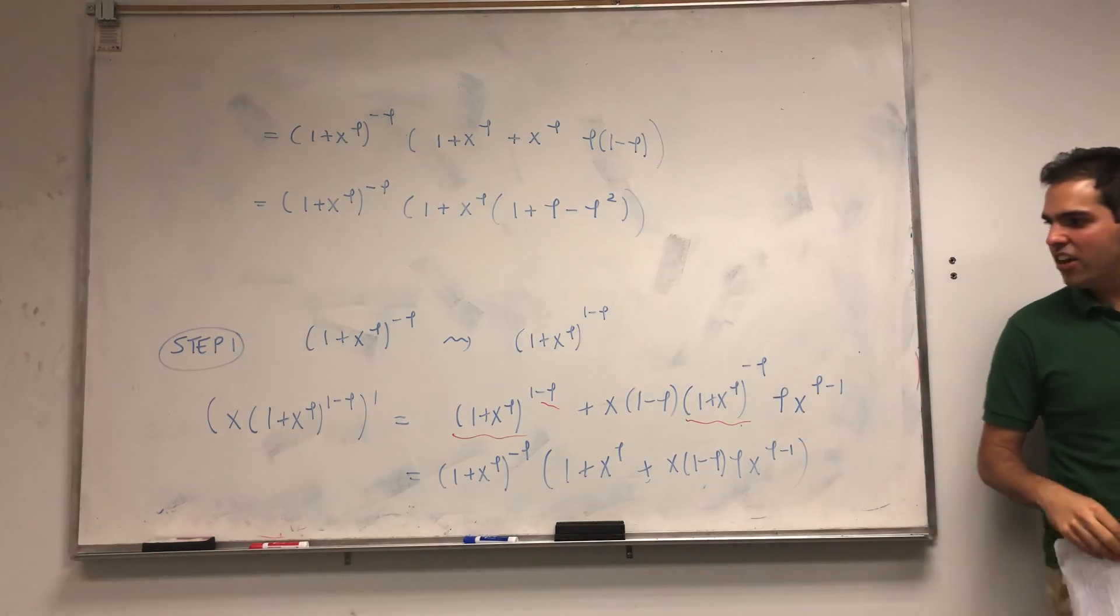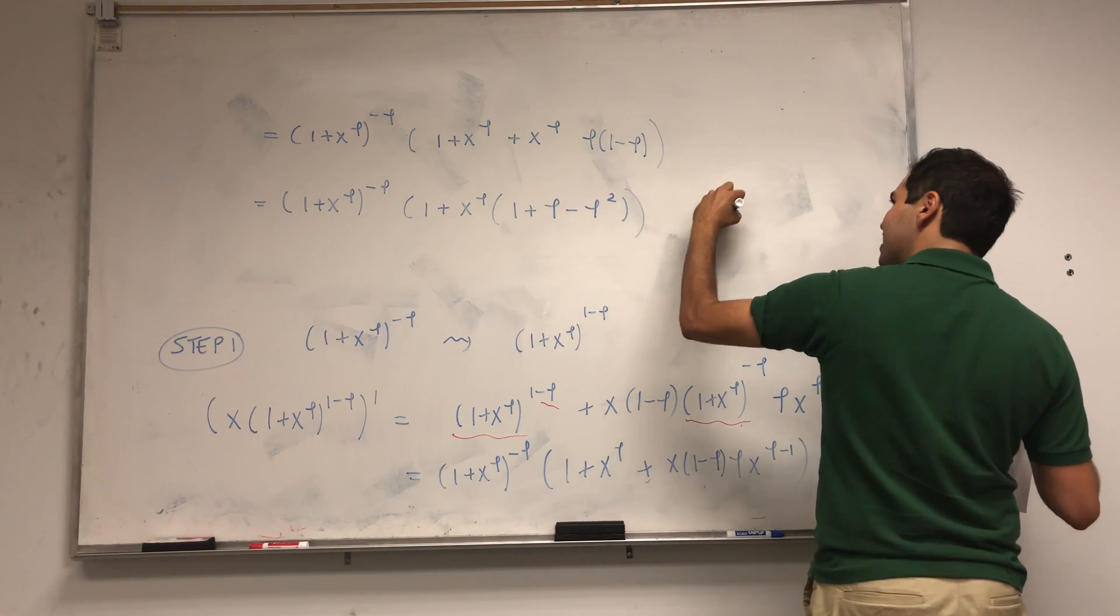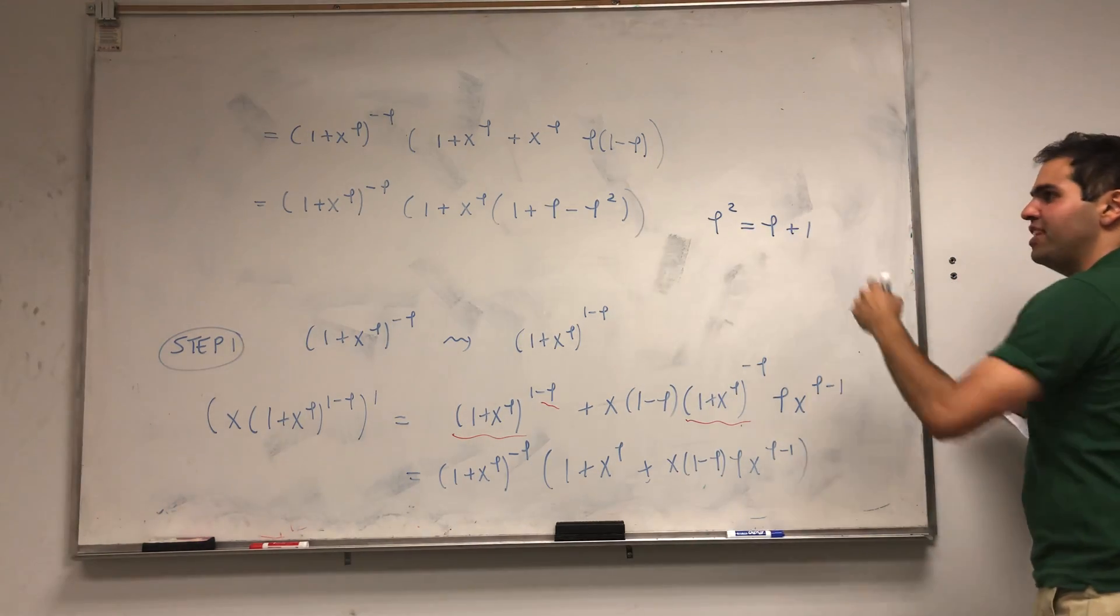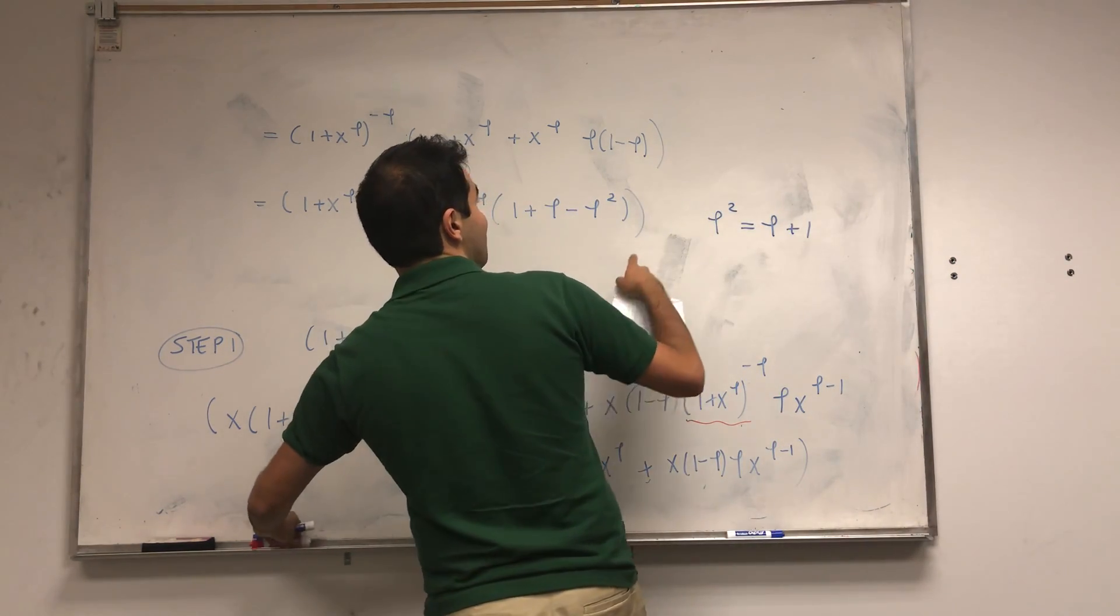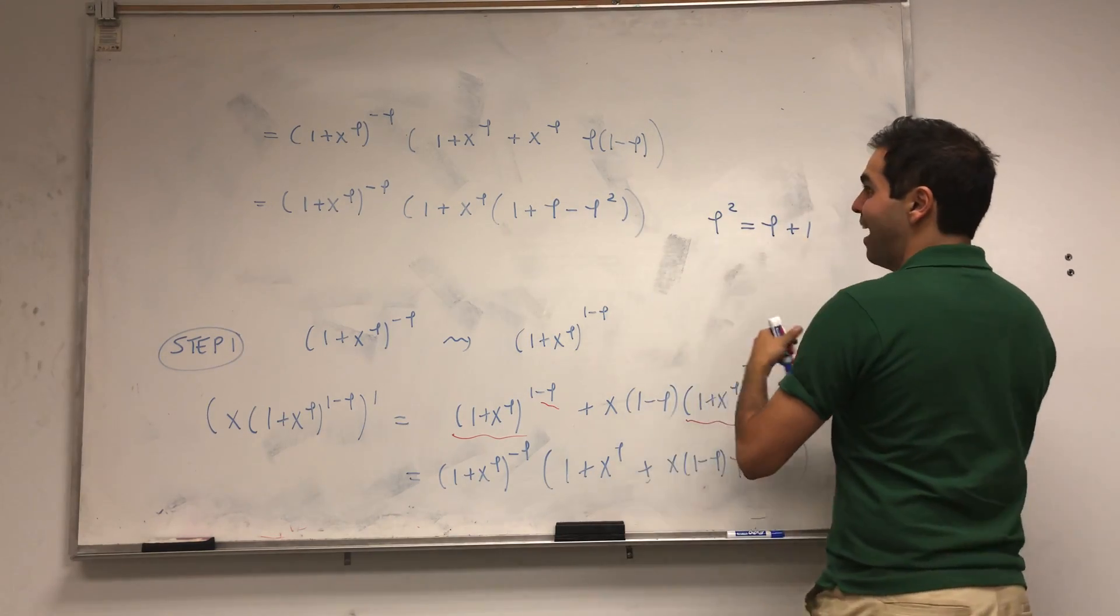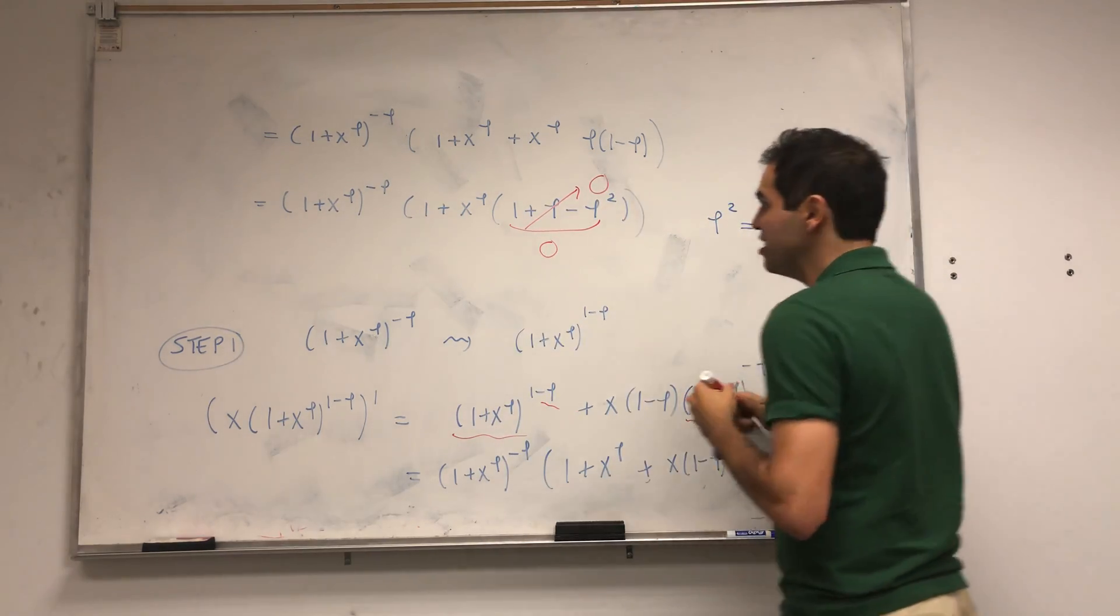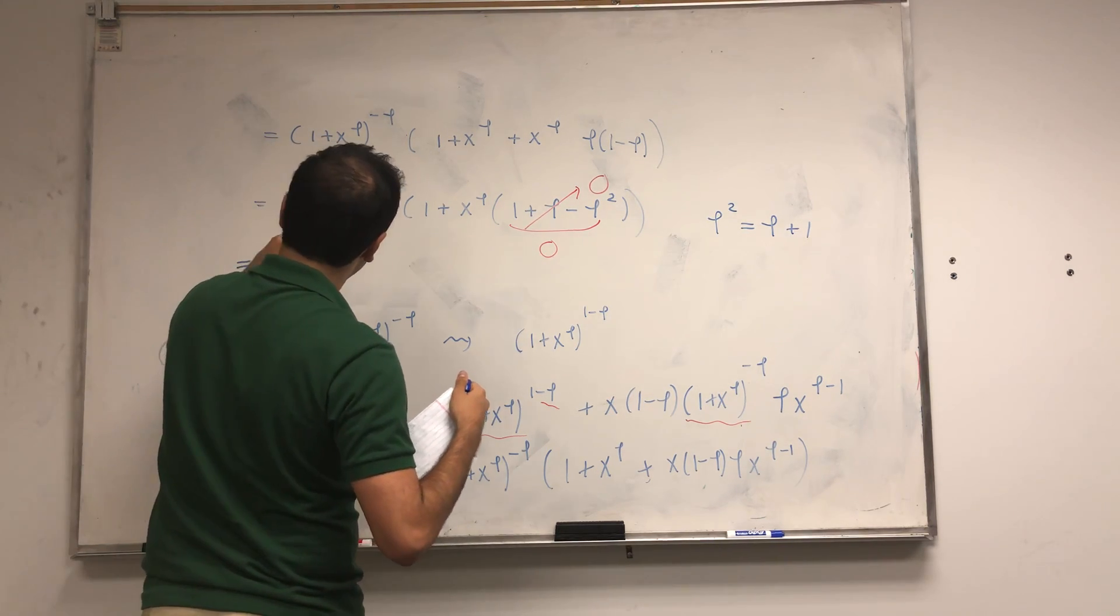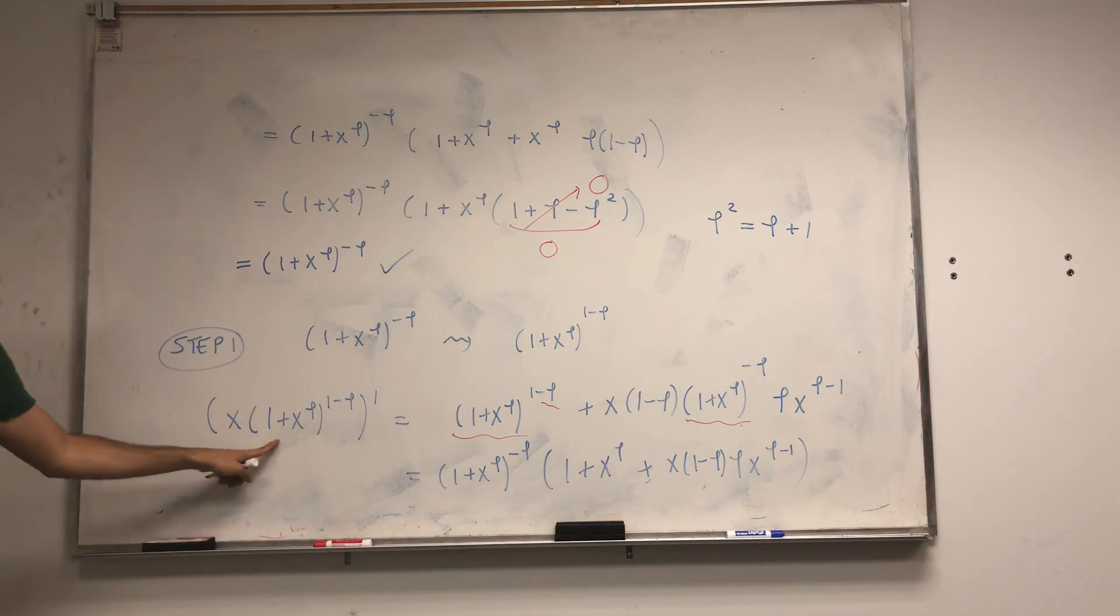All right, this looks pretty complicated. That said, remember what I told you at the beginning: the most important thing to know about the golden ratio is that phi squared is phi plus 1. In particular, 1 + phi - phi^2 becomes 0. So this whole thing disappears, there's no x^phi term, and in the end we get (1 + x^phi)^(-phi). So indeed, if you differentiate this function you get our original function back.